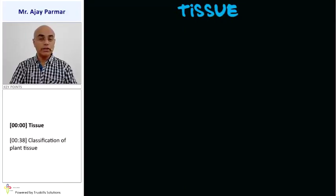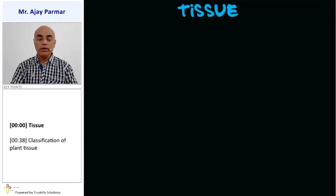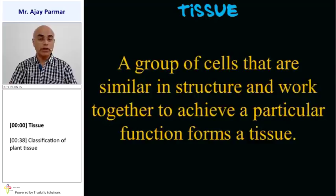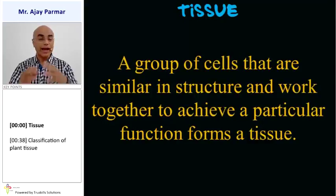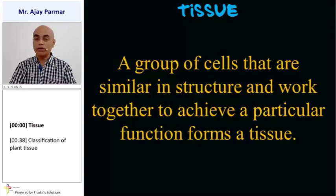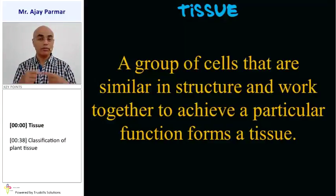The structural and functional unit of a living organism is a cell. So, what is a tissue? Tissue is nothing but a group of cells that are similar in structure and work together to achieve a particular function. That means a group of cells similar in structure performing a similar function — that we call a tissue.